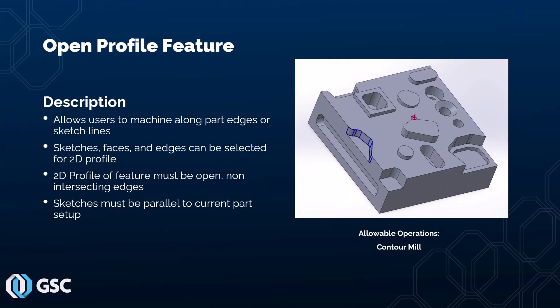The next type of feature is the open profile feature. This allows users to machine along part edges or sketch lines — for example, if you just wanted to machine a finish pass along a specific edge. When defining an open profile feature, you can use sketches, faces, and edges as your 2D profile. The 2D profile must be open with non-intersecting edges. Sketches must be parallel to the current part setup. The allowable operations are contour mill.